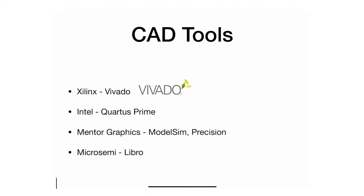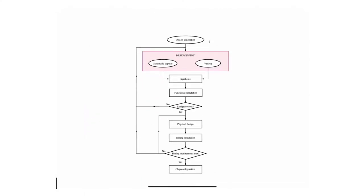All CAD tools pretty much perform the same functionality. I'm showing you a flowchart of a generic CAD tool — all of them have some version of this particular flowchart. What you do first is design your circuit and then input it into the software. Instead of just walking you through this flowchart, I'll show you how it's done in Vivado itself.